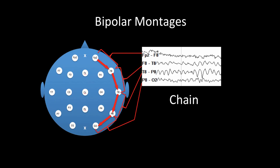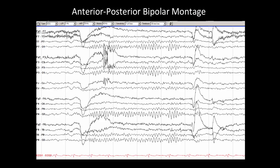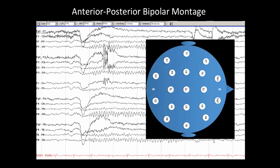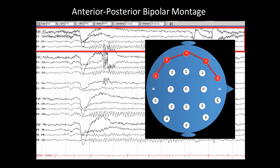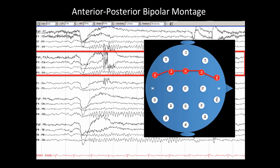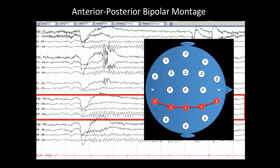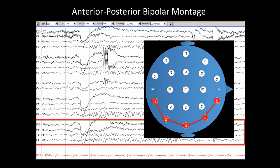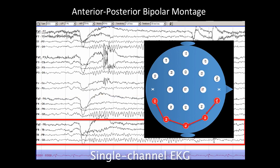In this case, this is the right temporal chain. Several chains can be placed together in a single display, such as an anterior-posterior bipolar montage. This montage is laid out as if looking at the top of the patient's head facing to the right. We see first the left temporal chain, then the left parasagittal chain, then the midline, then the right parasagittal chain, and then the right temporal chain. At the bottom we see a single EKG channel as well.